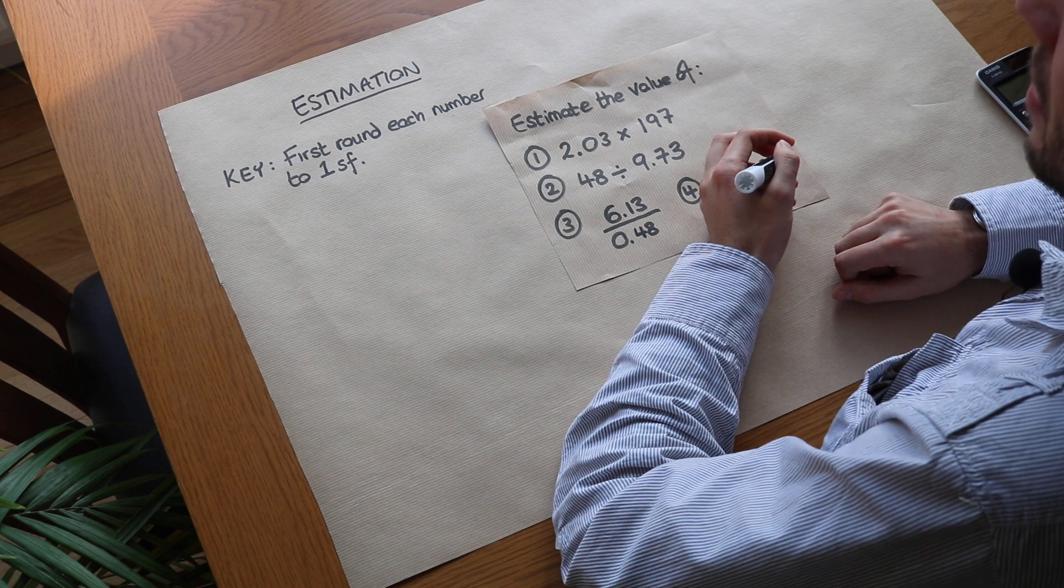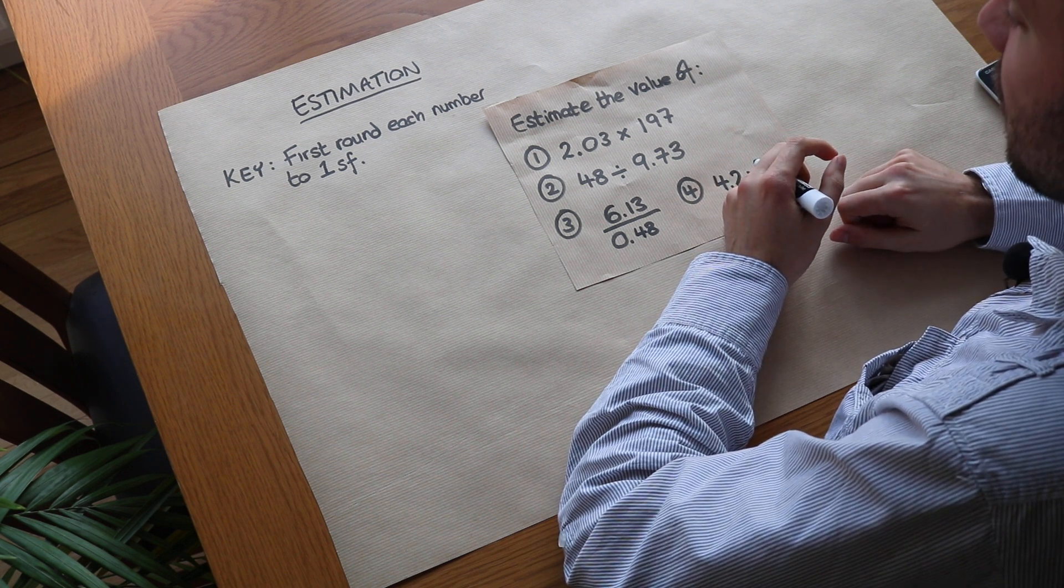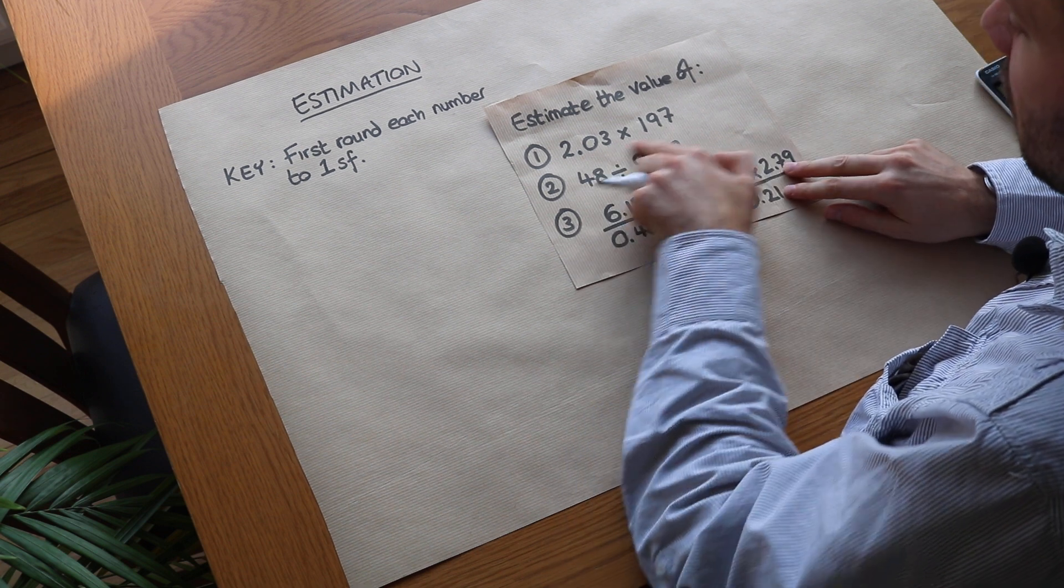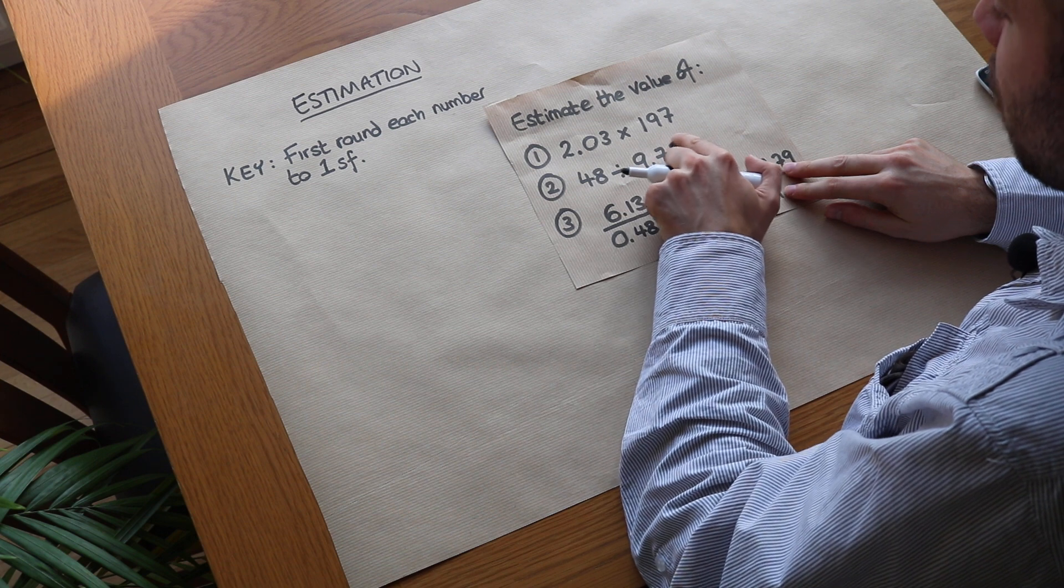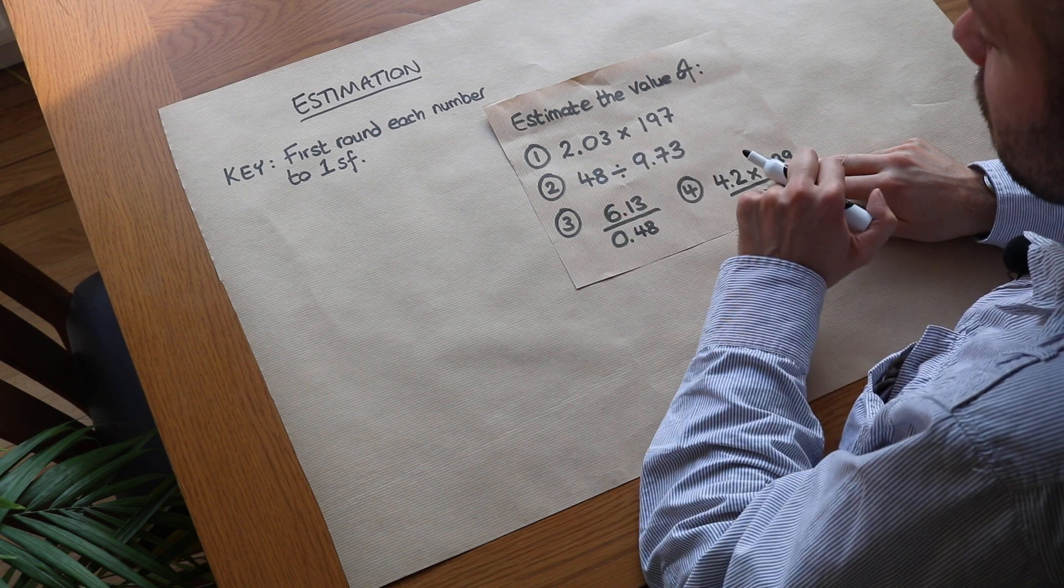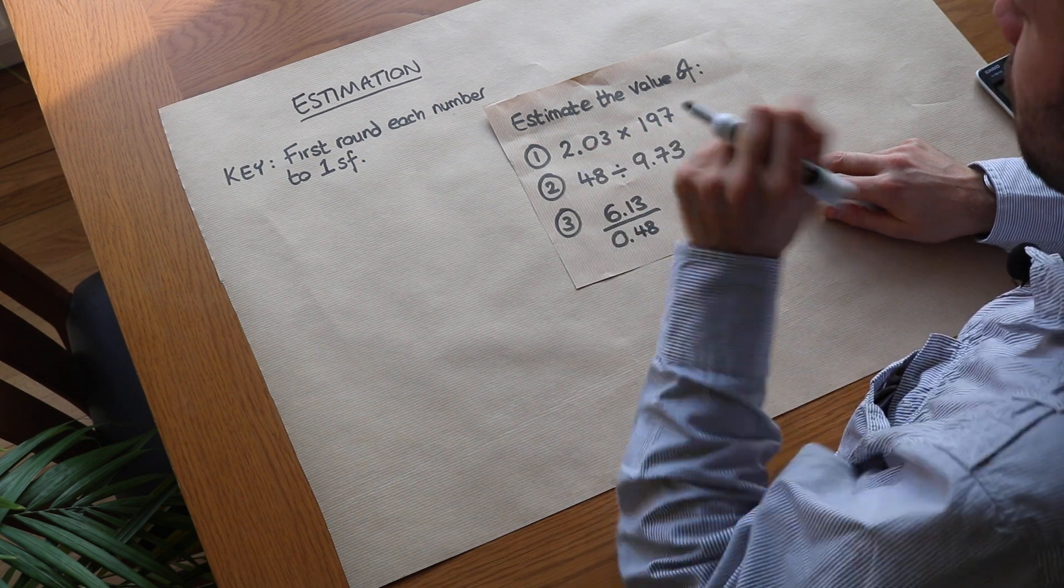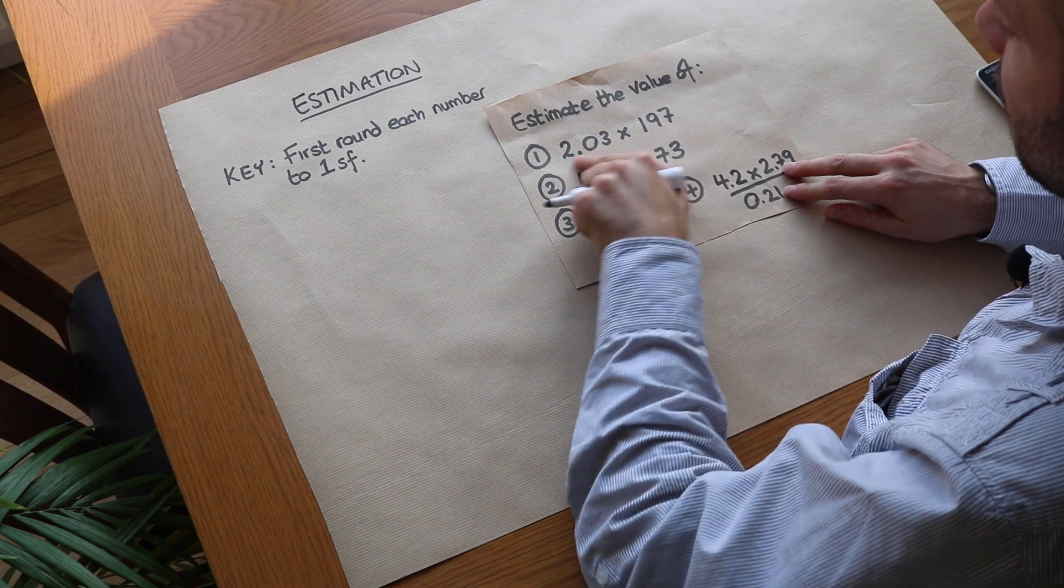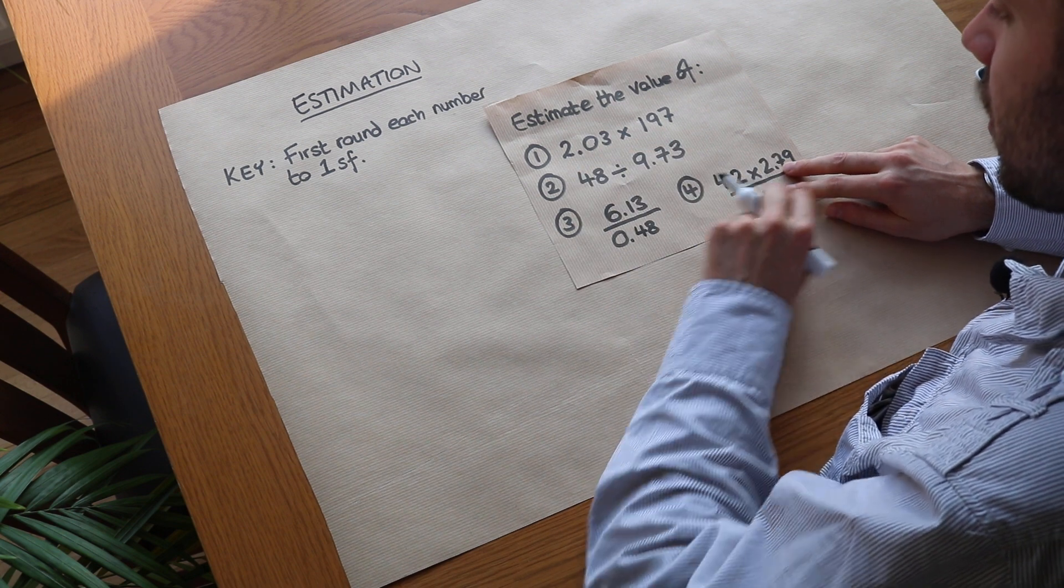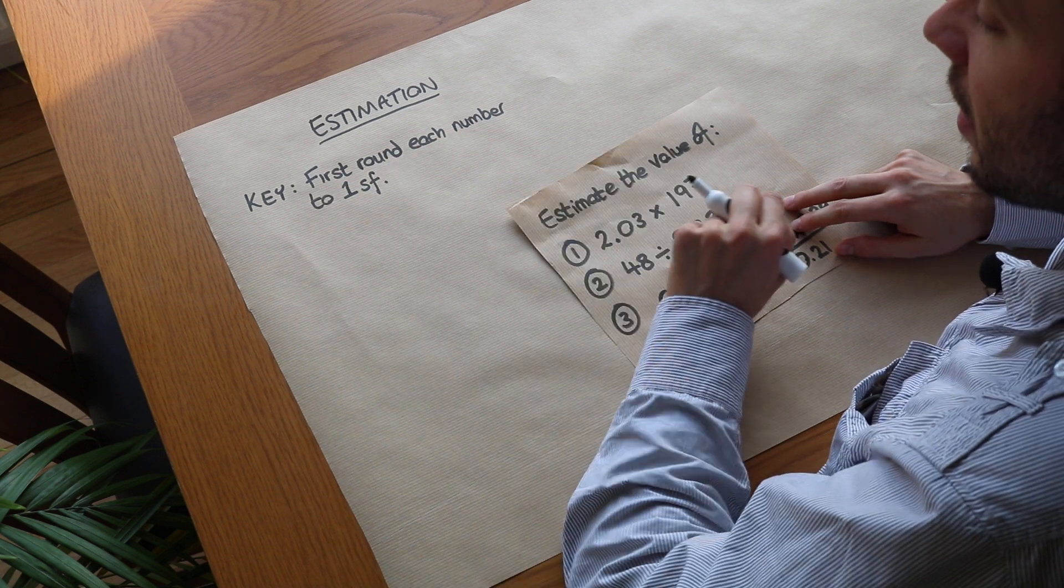Hello and welcome to this video on estimation. Estimation is having a rough idea of the result of a calculation, and we don't want to have to do long multiplication to work this out. It might be that we're out and about and we've got these figures and we want to quickly multiply them out and get a sense of what the value is. The key with these kind of questions is to round each number to one significant figure.